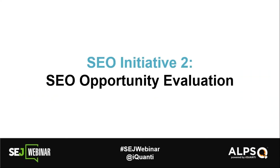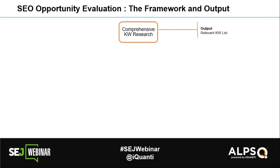Let's jump into the second use case — planning and identifying the potential of SEO. Various companies do this differently: some on a quarterly basis, some at the beginning of the year to create a roadmap of activities, some to figure out where to invest in SEO, and some to make a business case for whether SEO will be a big aspect of their overall marketing. The first step in any SEO planning exercise is comprehensive keyword research. I cannot emphasize this enough — keywords are really at the core.